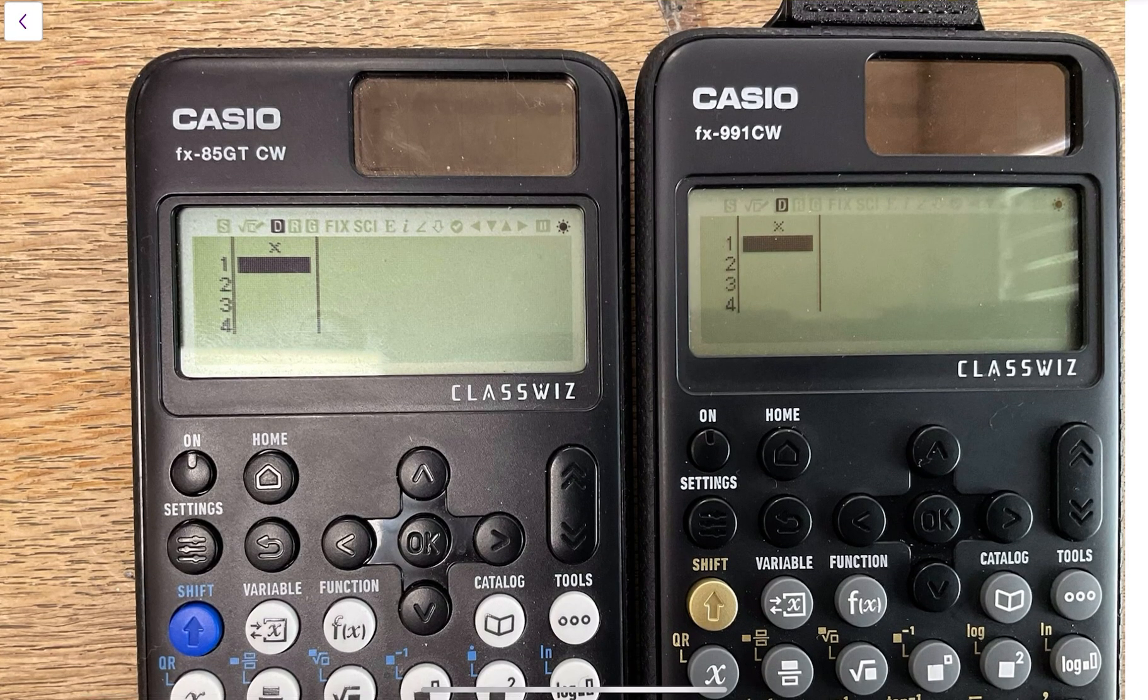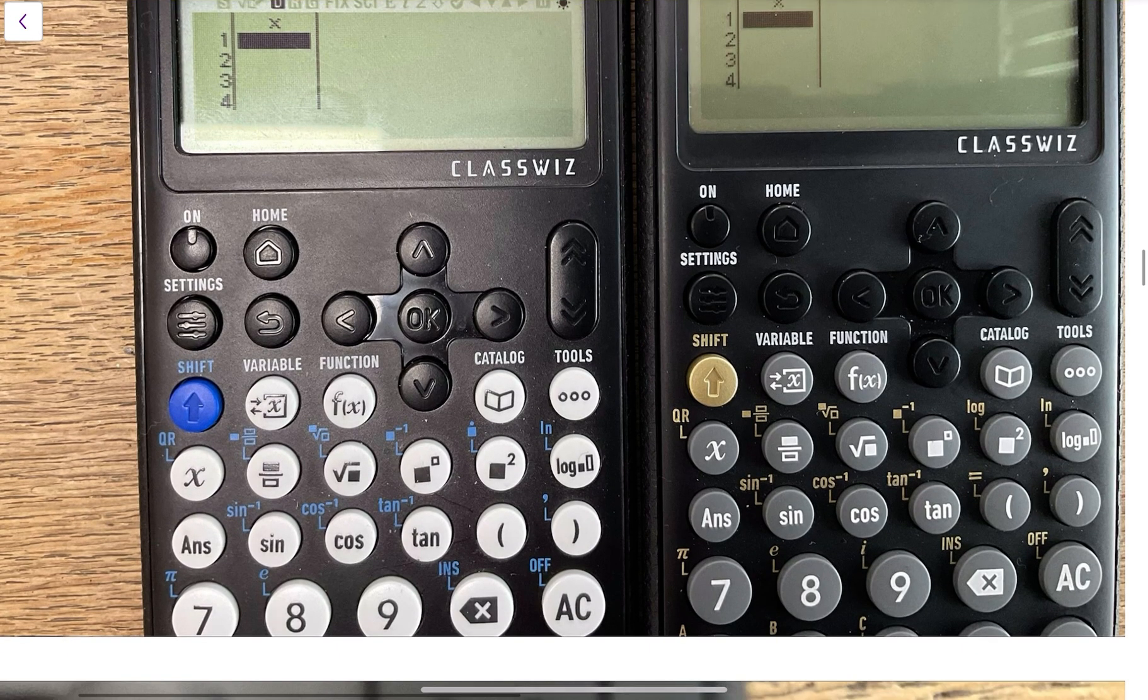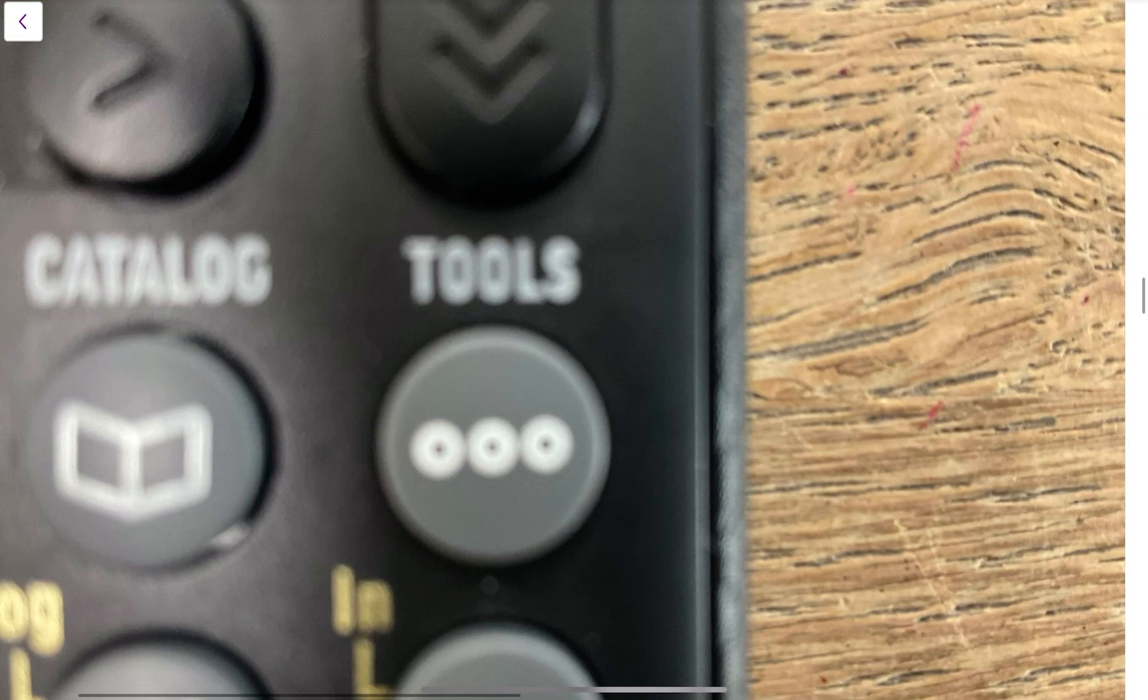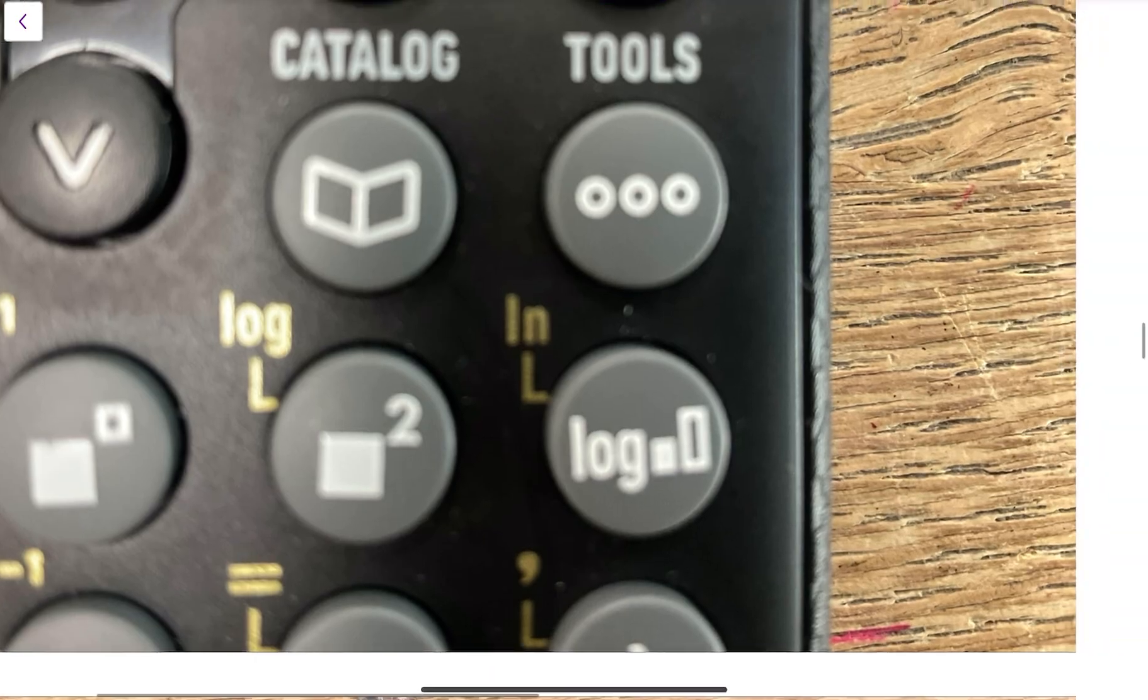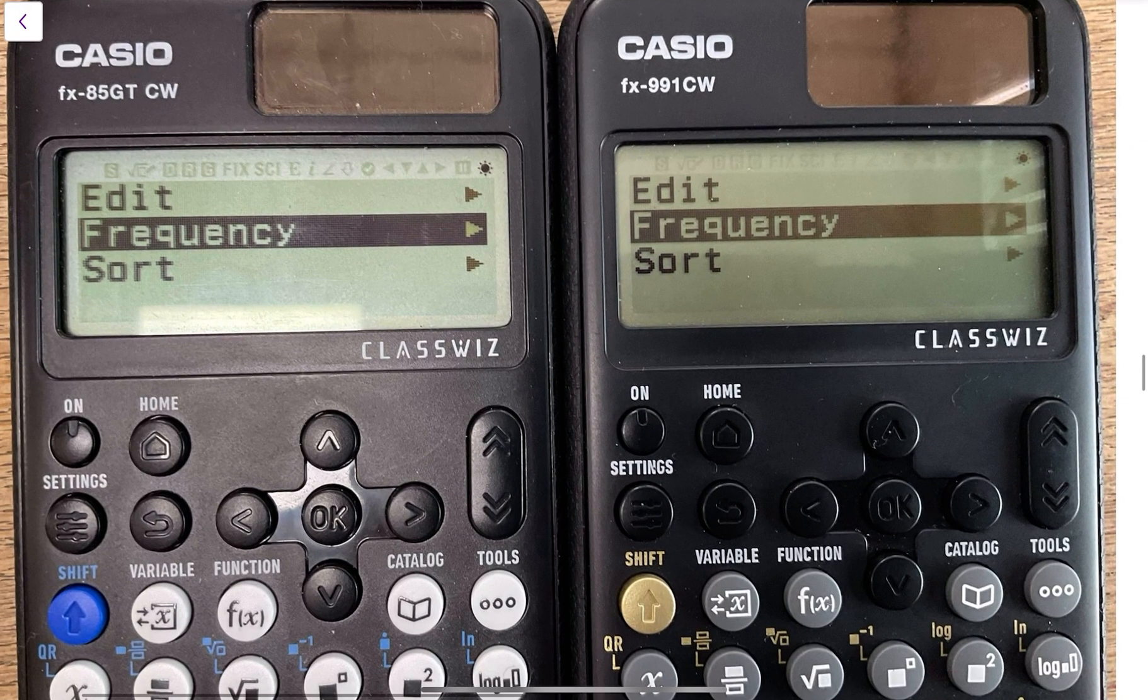When you hit that, quite often what comes up is you've got an X column and you haven't got an F column. I would advise you to turn on the F column even if it was a question which had no frequencies, because the default is it'll just make all those Fs ones. So how you turn it on: you hit the tools button and then it comes up with frequency and you want to turn the frequency on.